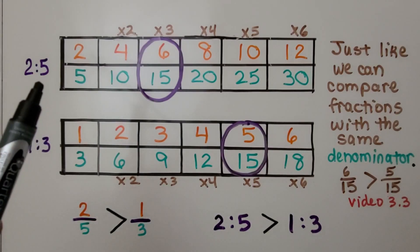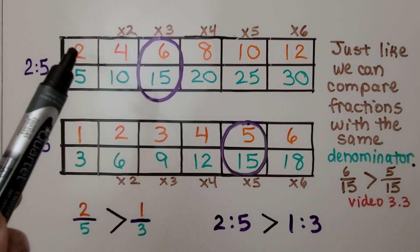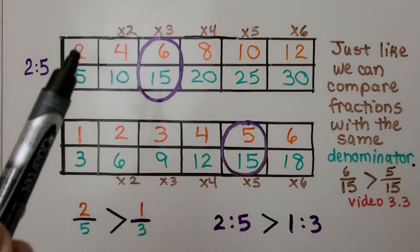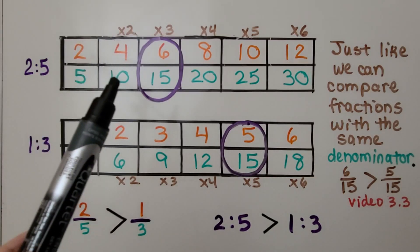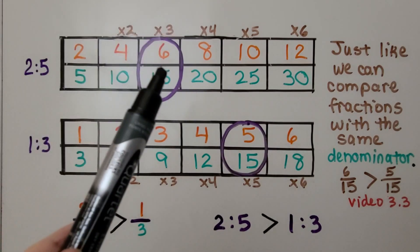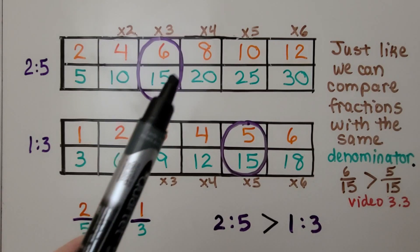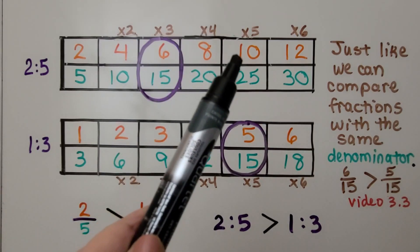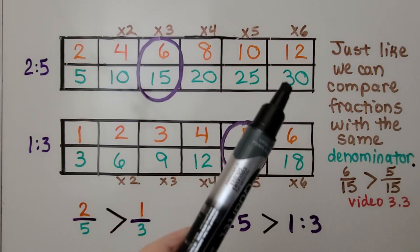We make a table for the ratio 2 to 5, with 2 on top and 5 on the bottom, and we multiply each of the terms by 2, 3, 4, 5, and 6. 2 times 2 is 4, 2 times 5 is 10; times 3 gives 6 over 15; times 4 gives 8 over 20; times 5 gives 10 over 25; and times 6 gives 12 over 30.